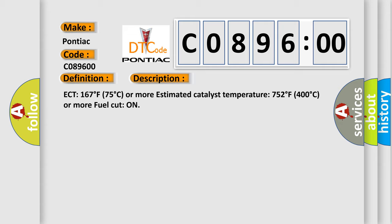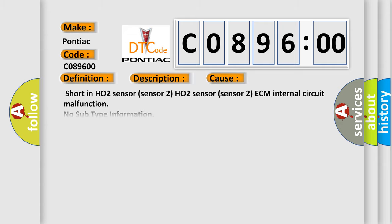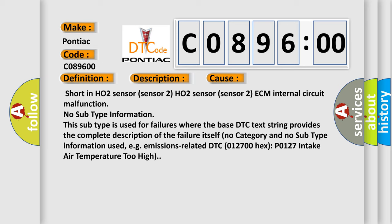This diagnostic error occurs most often in these cases: Shorten HO2 sensor sensor 2, HO2 sensor sensor 2, ECM internal circuit malfunction. No subtype information. This subtype is used for failures where the base DTC text string provides the complete description of the failure itself.